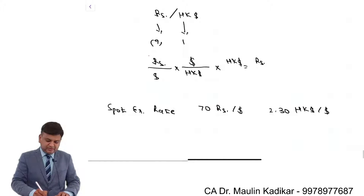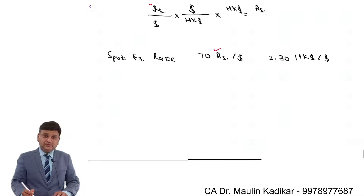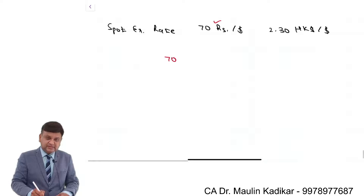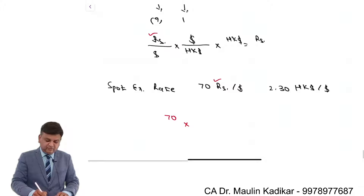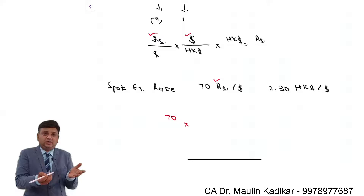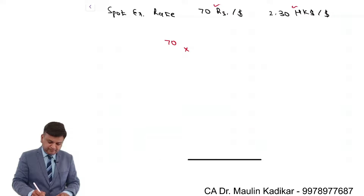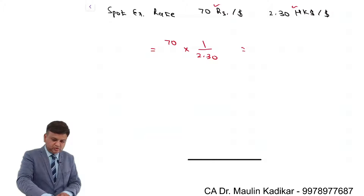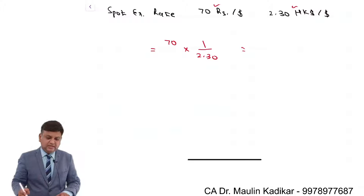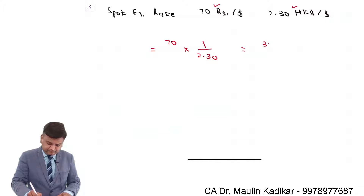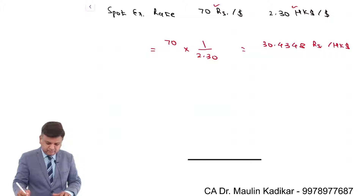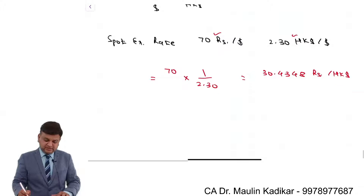For the spot exchange rate calculation: I want rupees per HKD. I have rupees per dollar as 70, and HKD per dollar as 2.3. I need dollar per HKD, so I take the reciprocal: 1 divided by 2.30. Therefore, 70 divided by 2.3 equals 30.4348 rupees per Hong Kong dollar. This is the spot exchange rate.